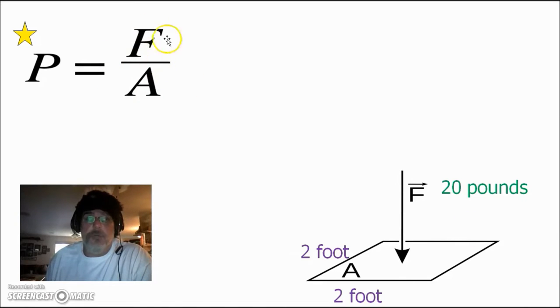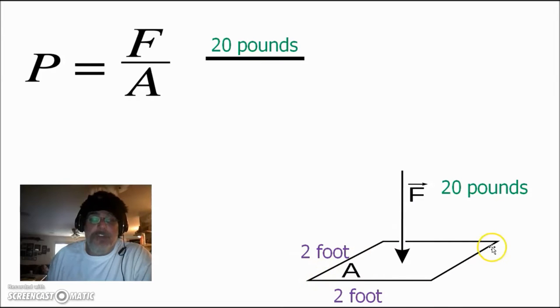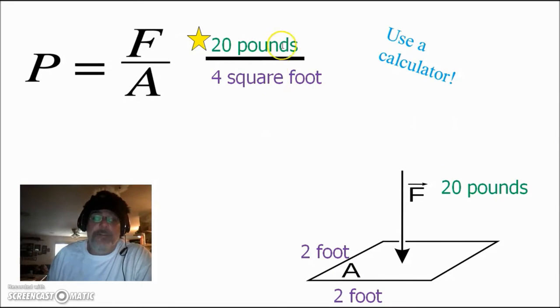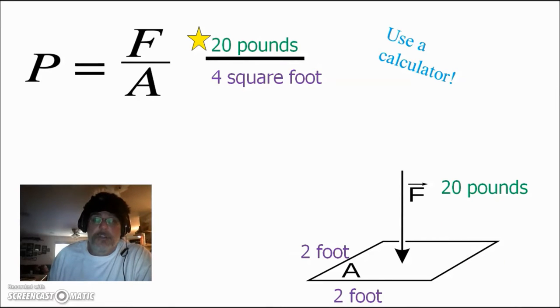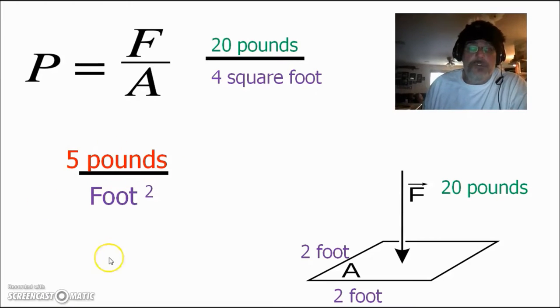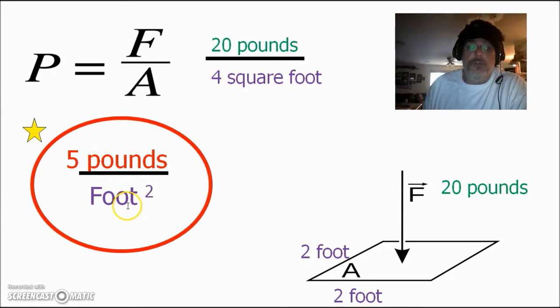So pressure is equal to force divided by area. Then you're going to plug and chug. So first you need to write the amount of force. The amount of force is 20 pounds. The area upon which that force is applied would be two foot times two foot, because area is equal to length times width. So two by two would be four square feet. And once you have this, 20 pounds divided by four square feet, I would definitely recommend using a calculator to do that. 20 divided by four is equal to five.